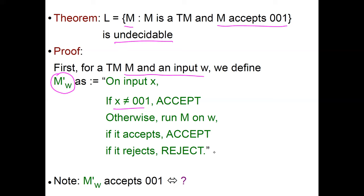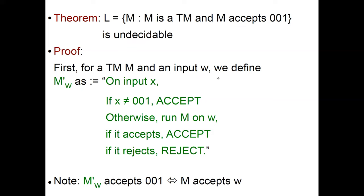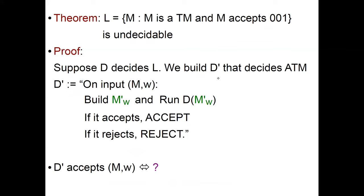On input X: if X is different from 001, you always accept. Otherwise, you run M on W, and if it accepts you accept; if it rejects you reject. This machine M'_W has W hardwired — hardcoded — in the program. Now note: M'_W accepts 001 if and only if M accepts W. When you feed 001 as X, you skip the first branch and run M on W, returning its answer.